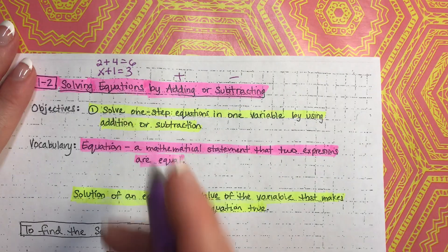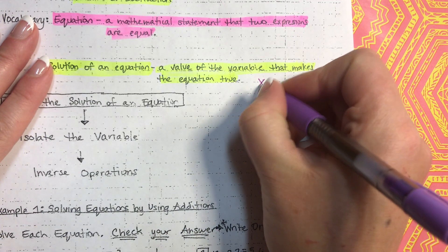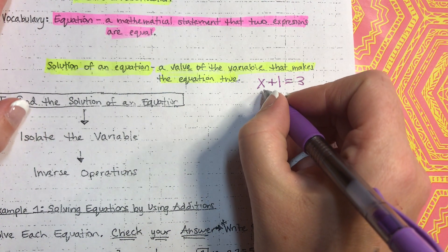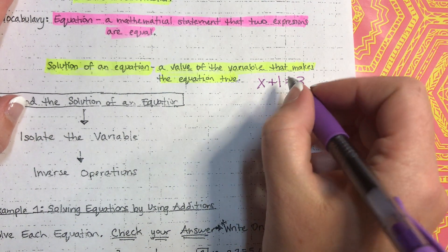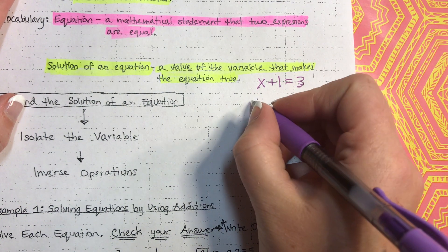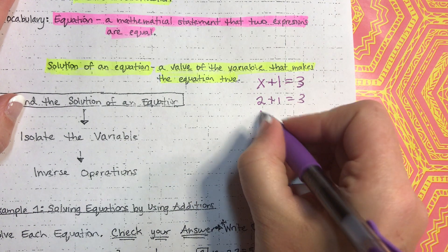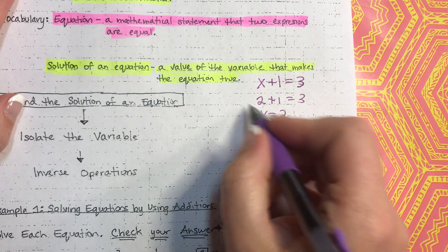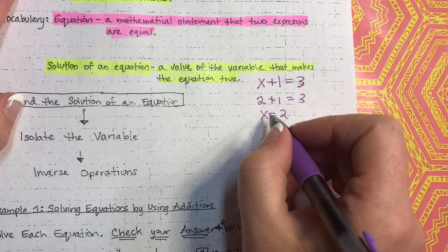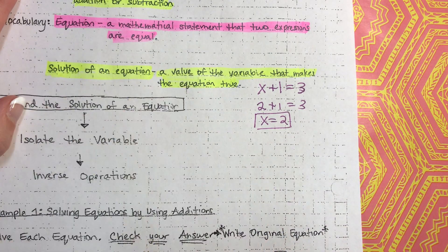So, if we go back up here and take this equation, x plus 1 equals 3 — what's the value that makes this true? Well, what plus 1 equals 3? Well, 2. So, if x equals 2, then 2 plus 1 equals 3. That means x equaling 2 is the value that, when you put it in, makes this equation true. So, that would be the solution.